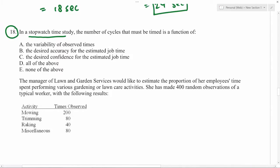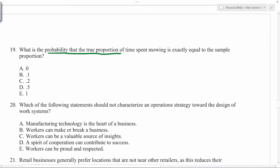In a stopwatch time study, number of cycles that must be timed is a function of all of the above. What is the probability that the true population of time spent mowing is exactly equal to the sample proportion? Now, because we have a large sample, the probability at a single point is approximately 0.